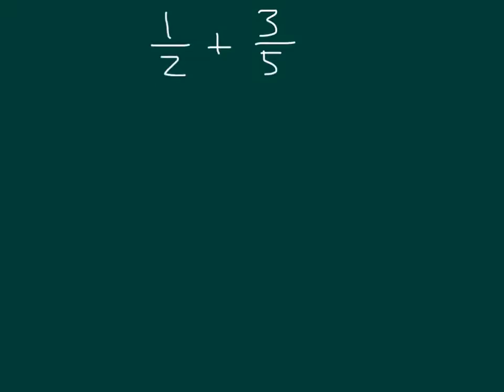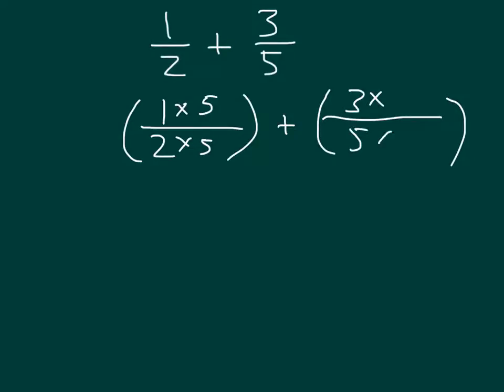So here we have another problem, 1 half plus 3 fifths. We need to get a common denominator. So we start with the 1 half here. And we'll multiply. And in this case, we're multiplying by 5, which is the other denominator. So that we get the denominator and a common denominator in this case of 2 times 5, which will be 10. For that fraction 3 fifths, we want that common denominator of 10. So that's why it's 5 times 2. And in the numerator, we have 3 times 2.